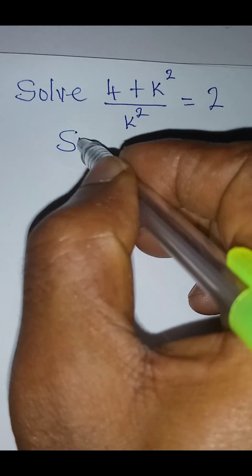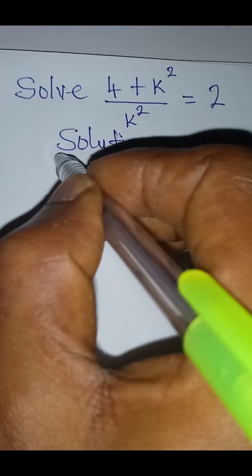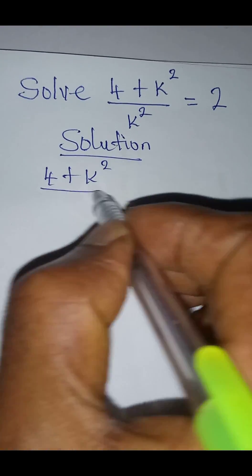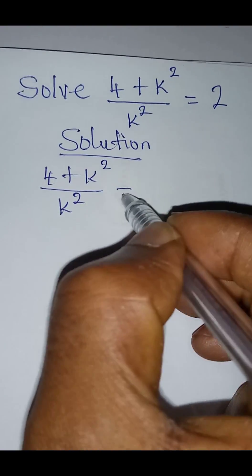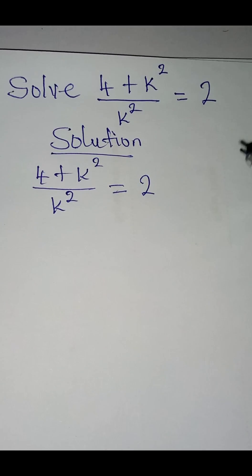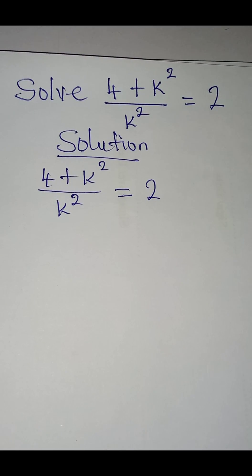Hello everyone, let's solve this problem quickly. We have 4 plus k squared all over k squared equal to 2. And then what are we going to do? Remember, we can split it the way that we want it.